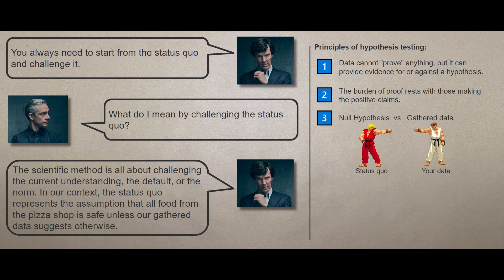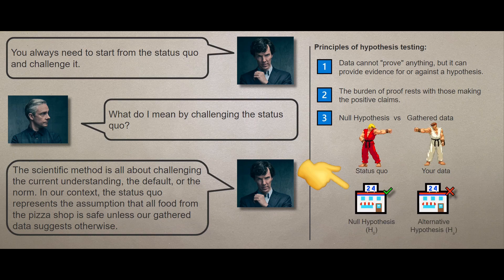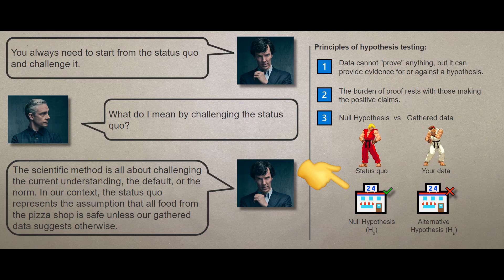The scientific method is all about challenging the current understanding, the default, or the norm. In our context, the status quo represents the assumption that the food from the pizza shop is safe unless our gathered data suggests otherwise. And this brings us to the third principle of hypothesis testing. To be scientific, we need to begin by challenging the default, the status quo using data. In our case, this default is that all food from the pizza shop is not poisonous and safe to consume. This default is known as the null hypothesis, denoted as H-naught.